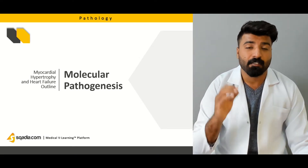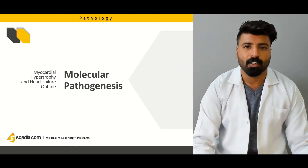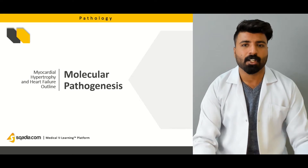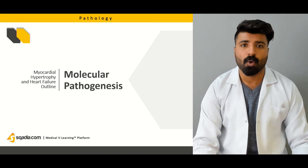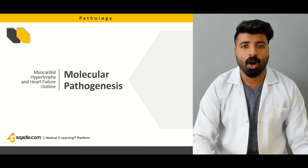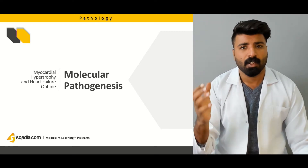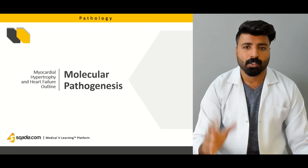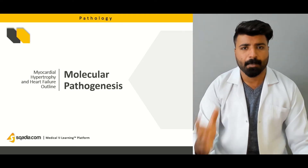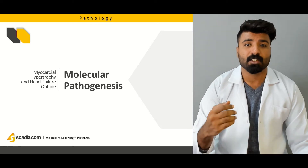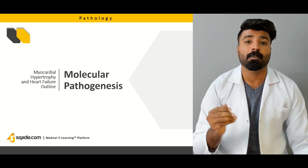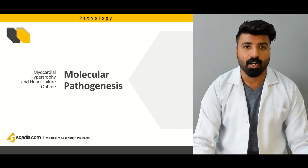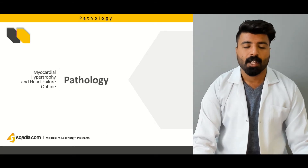We're going to talk about molecular pathogenesis — how this pathogenesis affects things at a very minute, molecular level. We'll discuss how adult isoforms get converted into neonatal isoforms, how beta adrenergic receptors go down when cells are hypertrophied, how calcium levels remain elevated in hypertrophied cells compared to normal cells, which of these elements contribute to hypertrophy, and which inhibitors can stop the remodeling of the heart.